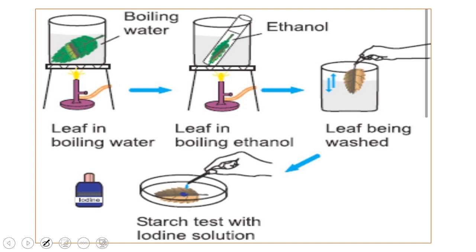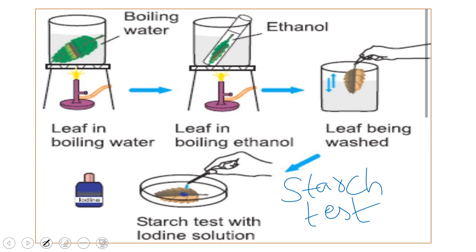Now, this is an experiment called the starch test. You have done the starch test in class 7th also, but there we used boiled potato or boiled rice. Now we are using a leaf for the starch test. Leaves are green in color and are considered the food factories of the plant because photosynthesis takes place inside the leaf. To do this activity, the materials required are: a beaker with water, a green leaf, a test tube with ethanol (ethyl alcohol or methyl alcohol, also called methylated spirit), a Bunsen burner, tripod stand, and wire gauze.